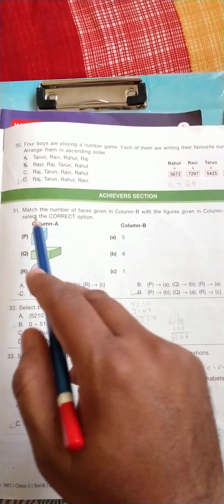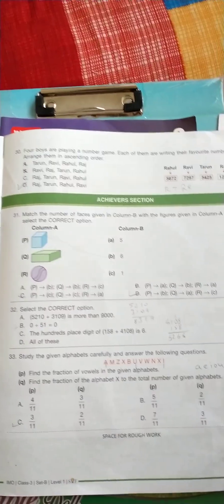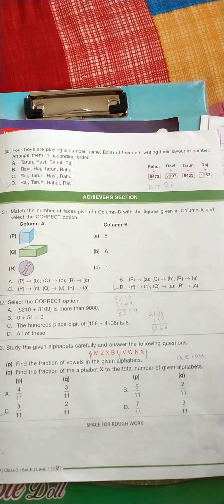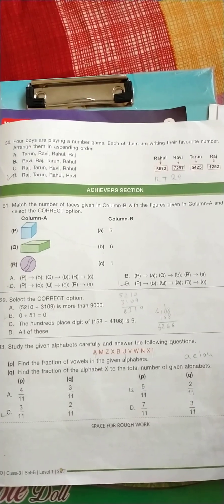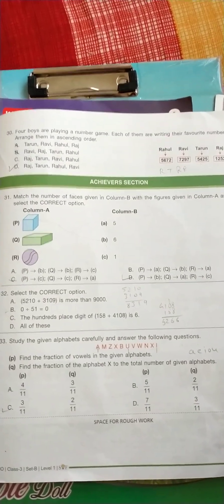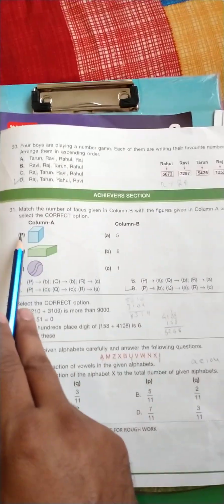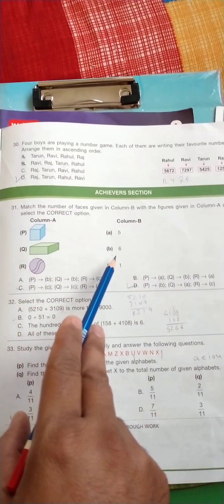Achiever section, question number 31: match the number of faces given in column B with the figure given in column A and select the correct option. It is a cube, cube has 6 faces, so P is correct answer is B. R, it is a spherical so 1, so the correct answer is option D.